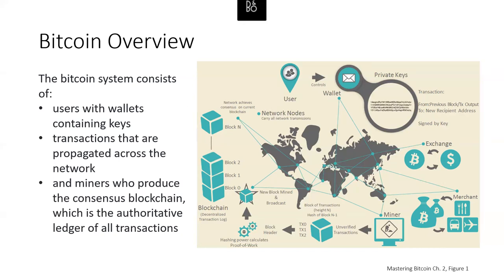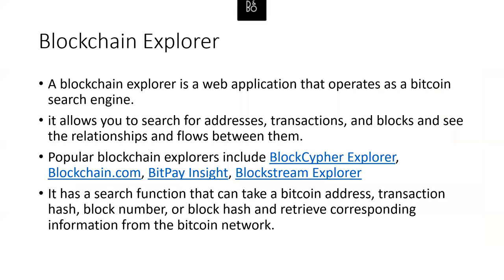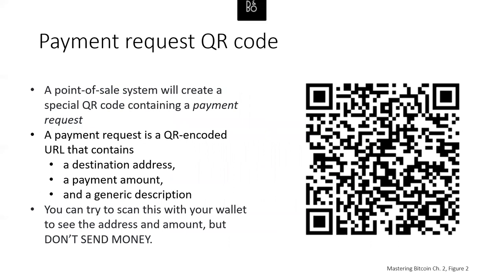When you want to look at transactions being sent through the Bitcoin network, you can use something called a blockchain explorer. A blockchain explorer is a web application that operates as a Bitcoin search engine, allowing you to search for addresses, transactions, and blocks and see the relationships between them. Popular examples include BlockCypher, BitPay Insight, and Blockstream Explorer. Each has a search function that can take a Bitcoin address, transaction hash, block number, or block hash and retrieve corresponding information from the Bitcoin network.